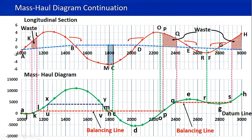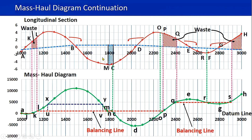This is the longitudinal section of a particular road section. This has been drawn after obtaining the heights of the center line. You have drawn such a road after leveling practice and then drawn the design section as well. This is the design level — you have the longitudinal section and according to the design level there's a small fill, because your design level is above the existing level.